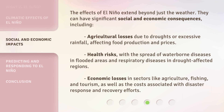The effects of El Niño extend beyond just the weather. They can have significant social and economic consequences, including agricultural losses due to droughts or excessive rainfall, affecting food production and prices. Health risks, with the spread of waterborne diseases in flooded areas and respiratory diseases in drought-affected regions. Economic losses in sectors like agriculture, fishing, and tourism, as well as the costs associated with disaster response and recovery efforts.